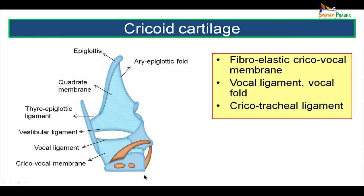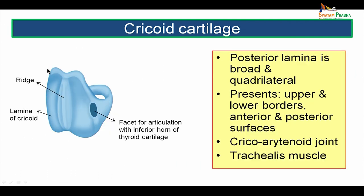Posteriorly the cricoid cartilage shows presence of trachealis muscle. The posterior lamina of the cricoid cartilage is broad and quadrilateral. It presents upper border, lower border, anterior surface and posterior surface. In the posteroinferior part of the lamina, at the junction between the lamina and the anterior arch, forms the cricothyroid joint. The upper border of the cricoid cartilage has a facet for the joint between the cricoid cartilage and the base of the arytenoid cartilage — the cricoarytenoid joint. The lower border of the lamina shows attachment of the trachealis muscle which attaches inferiorly to the rings of the trachea.